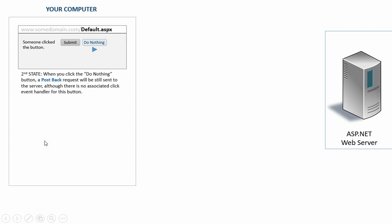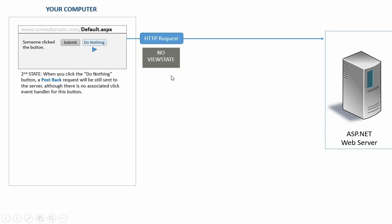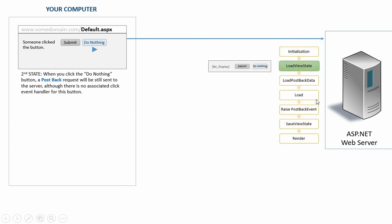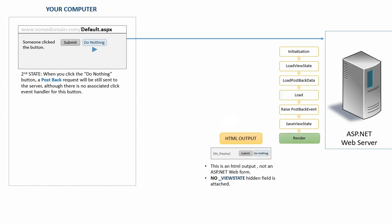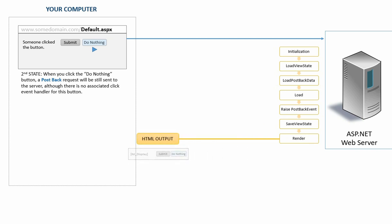The page runs correctly except one little problem. Let's try clicking the do nothing button and see what happens. This time our HTTP request will have no ViewState attached because we disabled ViewState for the label. After the page is initialized, load view state will do nothing because there is no ViewState. Page load will do nothing as well. That is, after the page is initialized, the text of the label control has never been changed during this postback request, so it just stayed as empty. The server will render this web form with an empty label text as an HTML output, with no ViewState hidden field attached. At the end, the browser will display the HTML response in which the label text is empty.